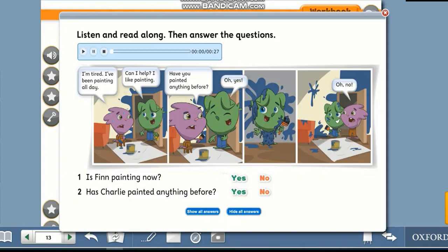As you heard in this conversation, he said first, I'm tired, I have been painting all day. This means he started painting in the past and he is still painting. But he asked his friend, have you painted anything before? That means he did something in the past and finished. The questions: Number one, is Finn painting now? Great, yes. Number two, has Charlie painted anything before? Great, yes.